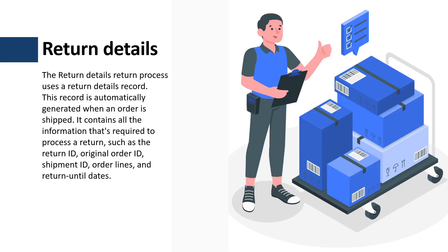In the return details process, the seller company typically prints a return label for each outgoing shipment and delivers it along with that shipment. So if a customer needs to return an item, they don't have to contact the seller company — instead, they can simply bag the item, attach the return label, and return it.